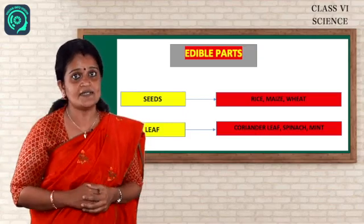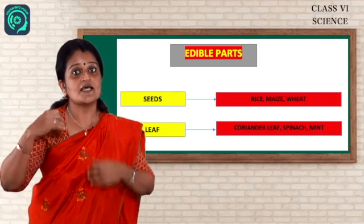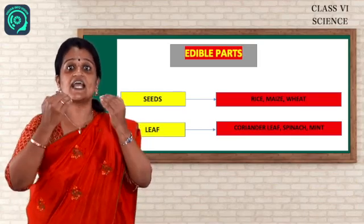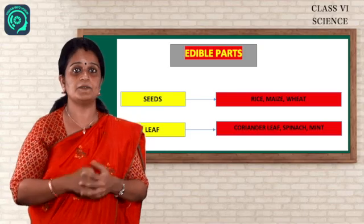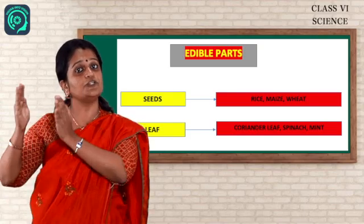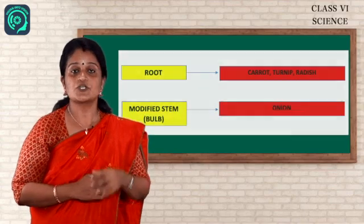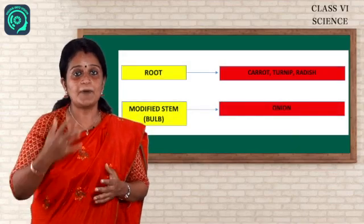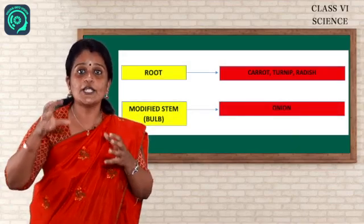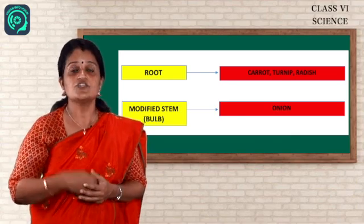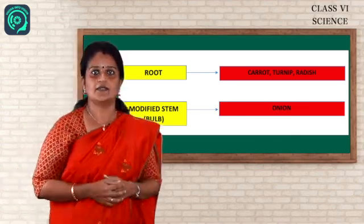Clear. So in the first one, the rice, maize, ragi, everything we can use. We can use it as an edible part. That is we can use it for the food items. Next is fruit. Tomato, brinjal, pumpkin, orange, all included in the fruit. So these are also edible parts.